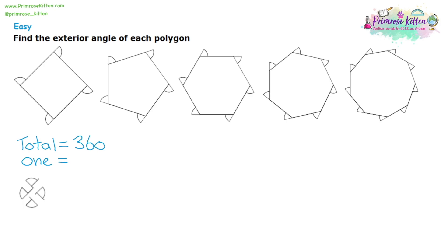A full circle is 360 degrees. So we know the total exterior angles of the shape is 360 degrees. If we want the exterior angle for one side, we're going to have to divide by four. 360 divided by four gives us 90 degrees. So we have the size of one exterior angle, which is 90 degrees, and the total of all four exterior angles, which is 360 degrees.